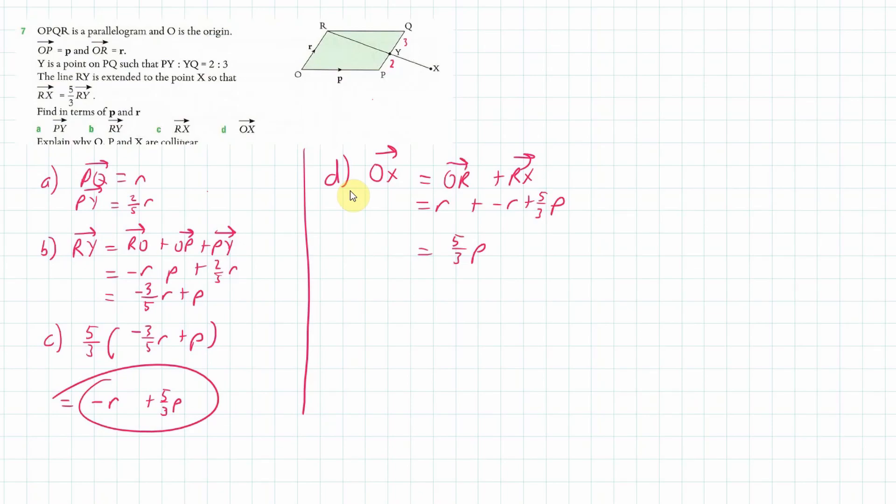Now, I've got to explain why O, P and X are collinear. Well, the reason for that is OP is equal to P, and OX is equal to five thirds P, which means that they must be collinear, because you've got the same, you've got P there, and then OX is just simply a multiple, five over three times that vector there. It's just a scalar. So they are definitely collinear.